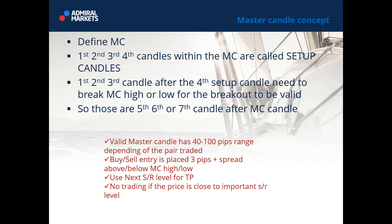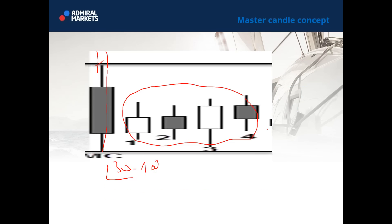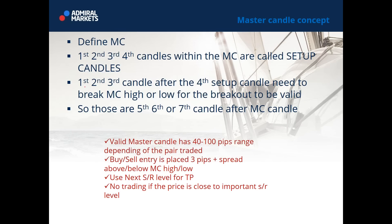Those are setup candles. The next three consecutive candles should break either the high or the low. We are not biased — we will not trade what we see fit. We don't know where the breakout will happen. In this concept, trend is not important; we simply take a true breakout whenever it happens. It should happen after four setup candles have been shown on the chart. One of the next three candles should break either the high or the low. The first, second, and third candle after the fourth setup candle need to break the master candle high or low for the breakout to be valid.